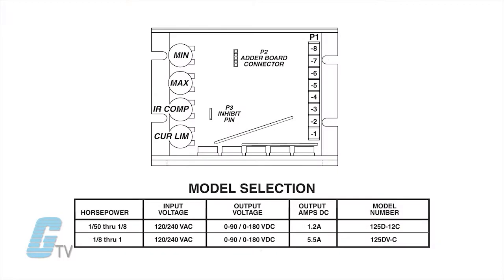These drives can be set up to work with shunt wound and permanent magnet motors up to 90 volts DC with a 120 volt AC input and up to 180 volts DC with a 240 volt AC input.